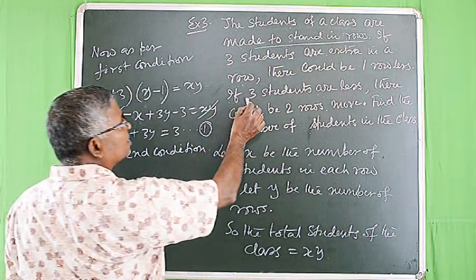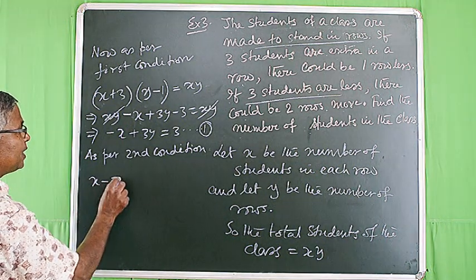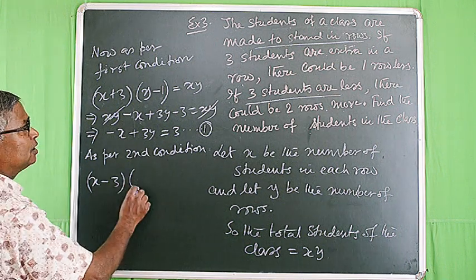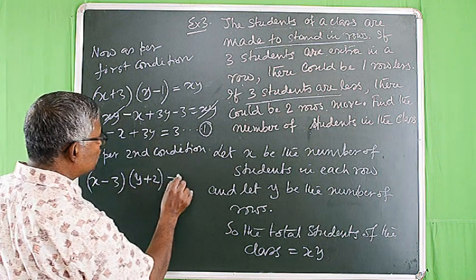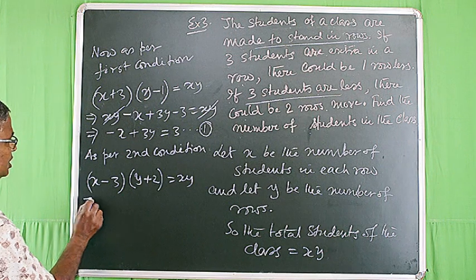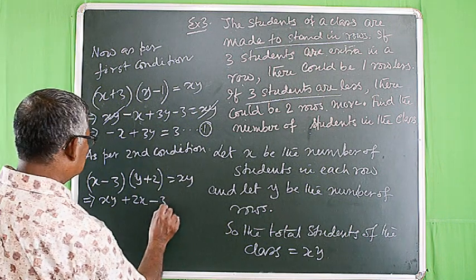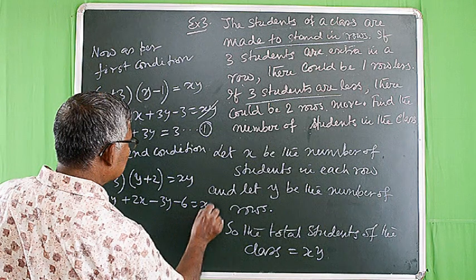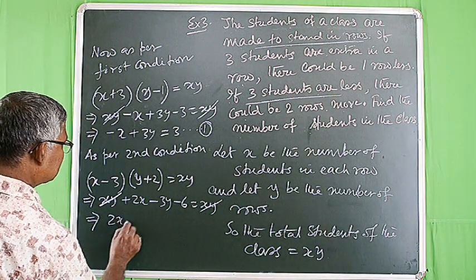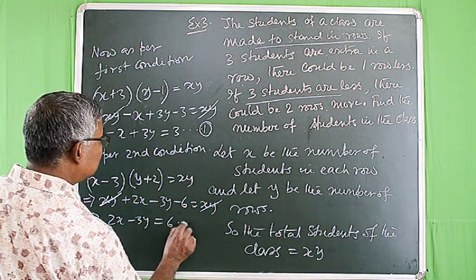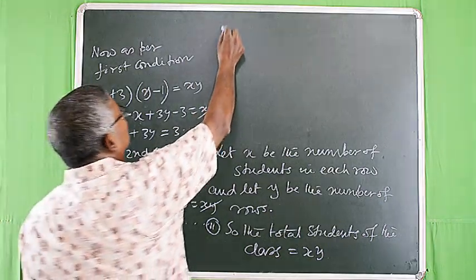As per the second condition, if three students are less in a row (x - 3) then the number of rows will be two more (y + 2), so (x - 3)(y + 2) = xy. Expanding: xy + 2x - 3y - 6 = xy, which implies 2x - 3y = 6. Suppose it is equation number 2.